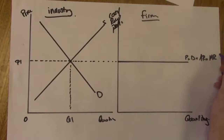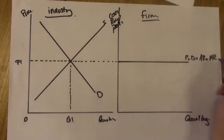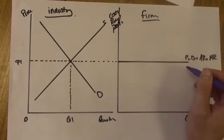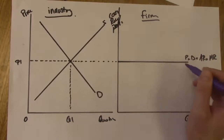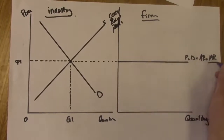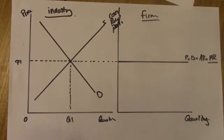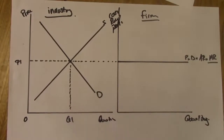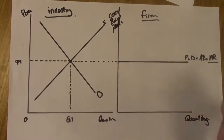This curve shows that price equals demand, which also equals average revenue and also equals marginal revenue — so you're showing four things on one curve. For A2 Economics and the AQA specification, the key concept here is MR — marginal revenue — because of the profit maximization rule where MR equals MC.